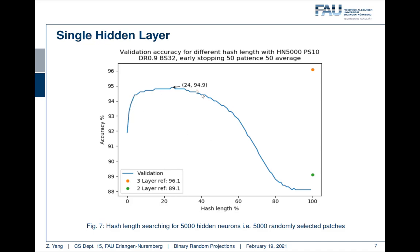And our blue curve here has only trainable parameters between the hidden layer and the output layer. The parameters between the input layer and the hidden layer are fixed, randomly generated binary, either zero or one. The best accuracy we achieve here is at hash length 24% with an accuracy of 94.9%.